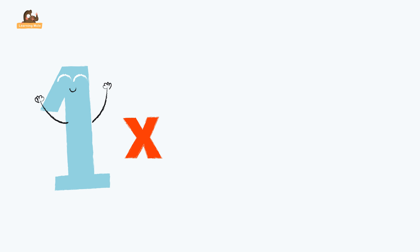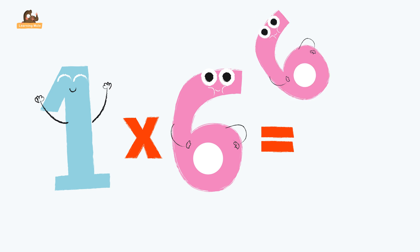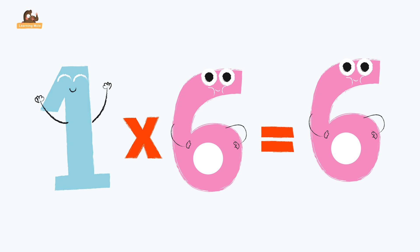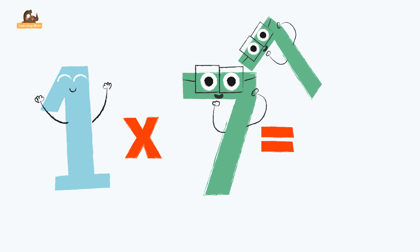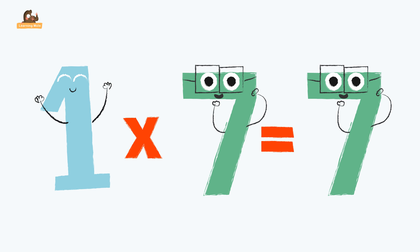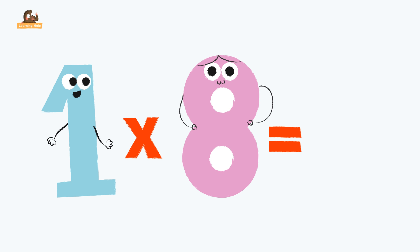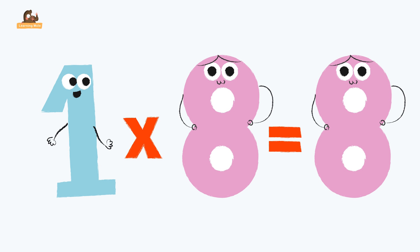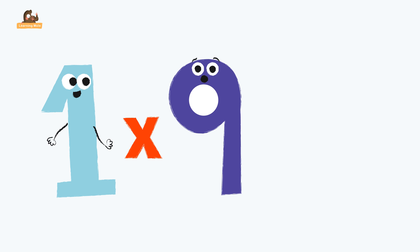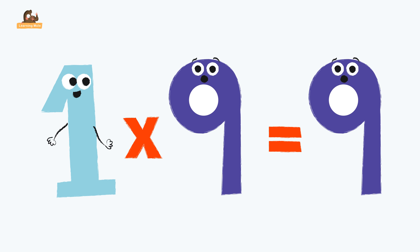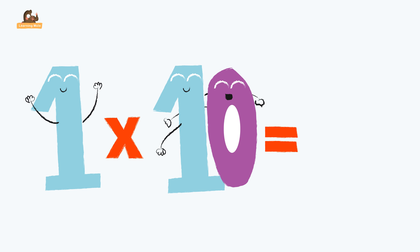One times six equals six. One times seven equals seven. One times eight equals eight. One times nine equals nine. One times ten equals ten.